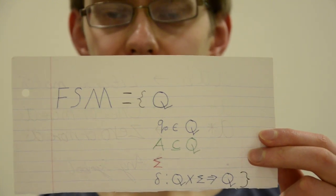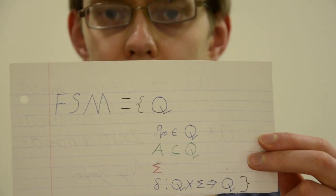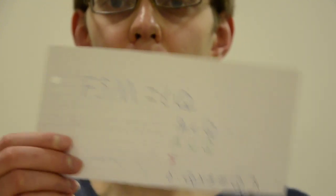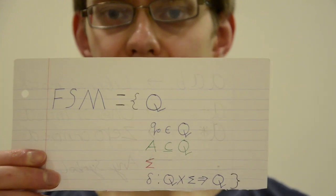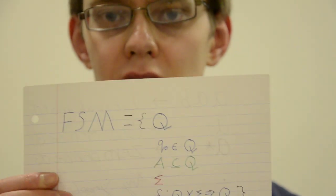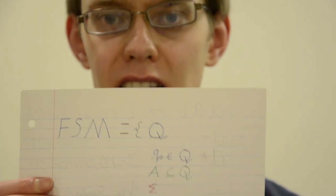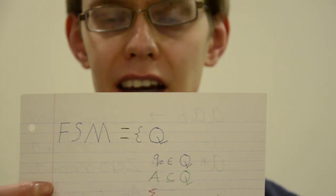Then there is an accept state or multiple accept states which are a subset of the total states and other points in the automata's execution where it will recognize the pattern within the language.